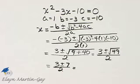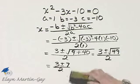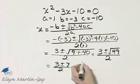And let's see what we have. Since this is 3 plus or minus 7, all over 2, let's go ahead and find out what these two values are.